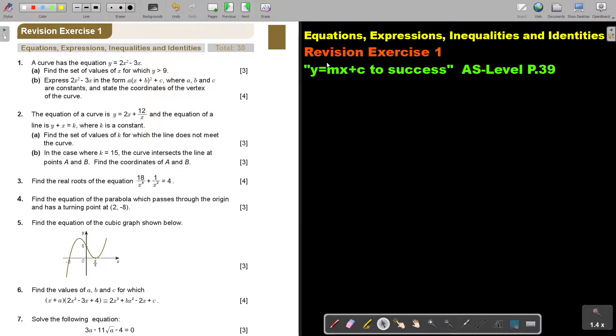In this video, I'm going to continue with Revision Exercise 1 of Equations, Expressions, Inequalities and Identities. You will find this on page 39 in the Namibia AS Level Mathematics textbook Y equals MX plus C to success. In the first video, we did number 1, 2 and 3. Now I want you to stop the video and do number 4, 5, 6 and 7. You can continue the video as soon as you are finished.